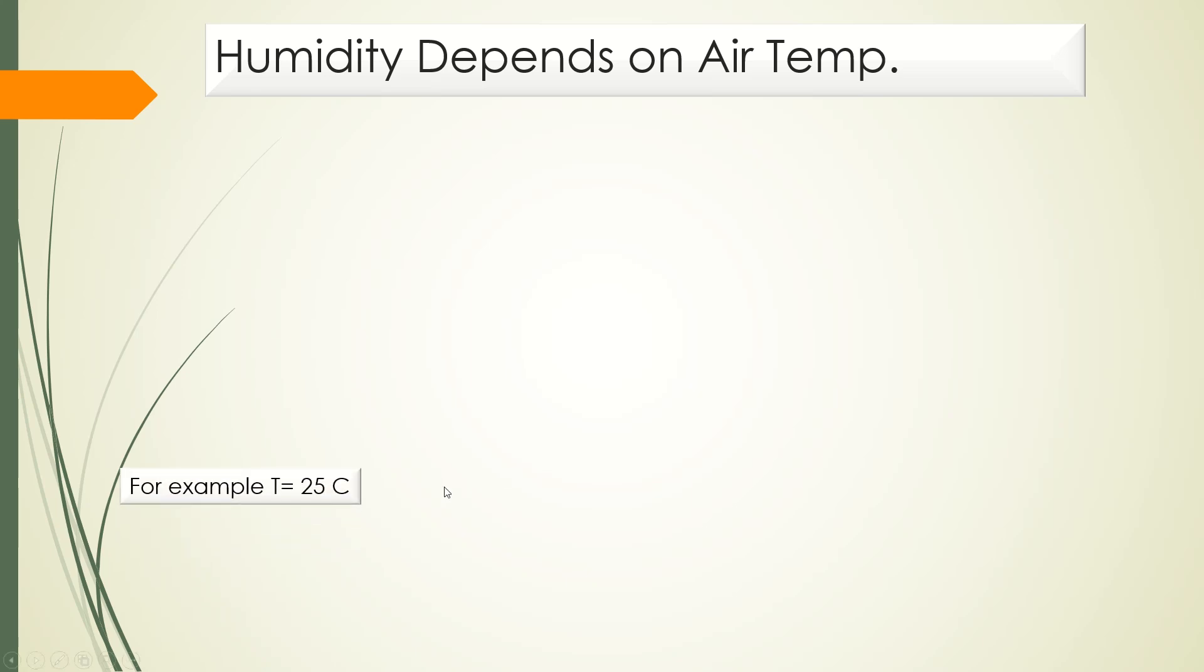For example, your air temperature is 25 degrees Celsius and your humidity level is 75%. Now, as you can see, the water level is constant in the second picture, so humidity is also the same. But if temperature increases from 25 to 35 degrees Celsius...